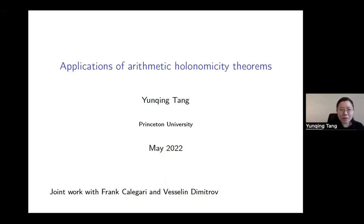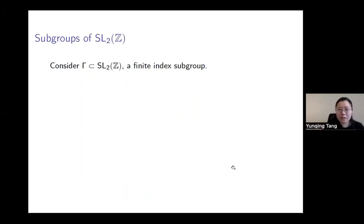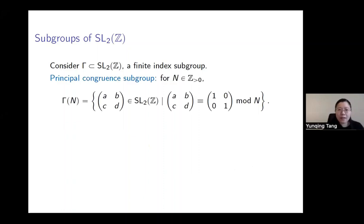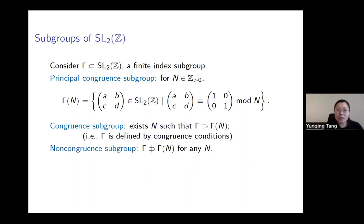Let me start from the unbounded denominator conjecture. We consider finite index subgroups of SL(2,Z). There is a special type called the principal congruence subgroup, which are the elements congruent to the identity matrix mod n. This gives us two types of subgroups: congruence subgroups, which can be defined using congruence conditions, and the other ones we call non-congruence subgroups.